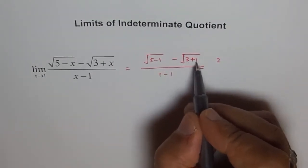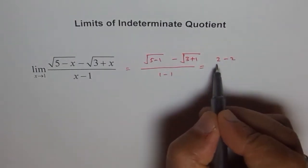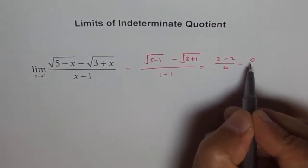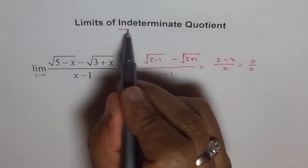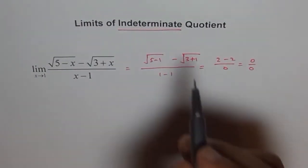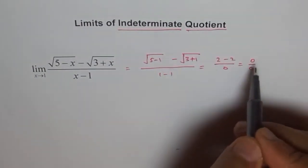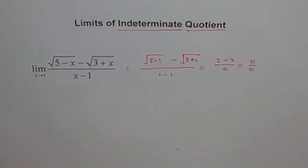And 3 plus 1 is also 4, square root is 2. And here we have 0 already, so we have 0 over 0. So whenever we have 0 over 0, we call it indeterminate quotients. These are indeterminate quotients wherever we get 0 over 0.